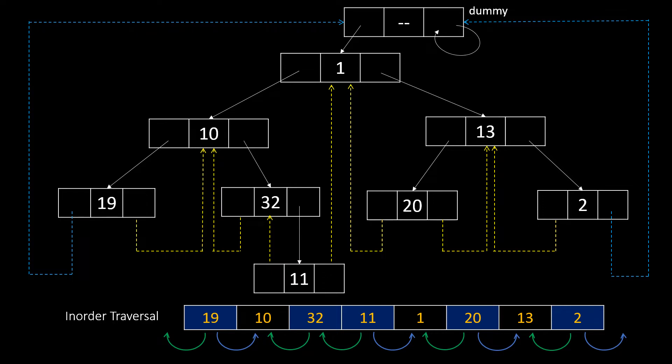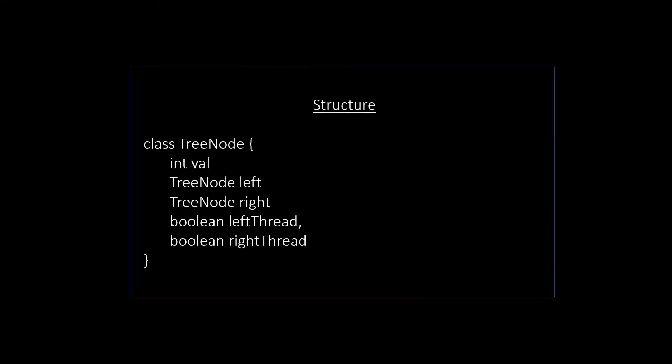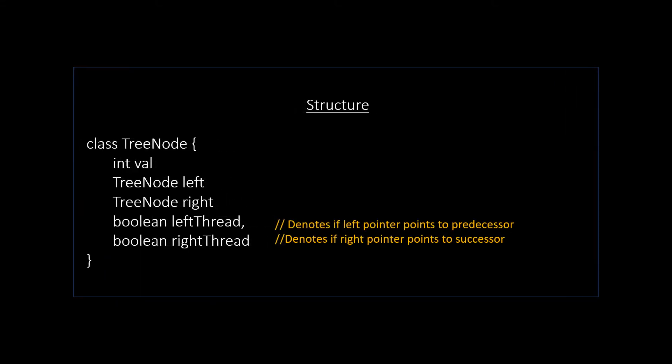In this type of linking, we will also need to maintain the data about what the pointer holds. Is it the child or the predecessor successor? So, the structure of node looks like this. It will have a value, a right pointer, a left pointer and two boolean variables.